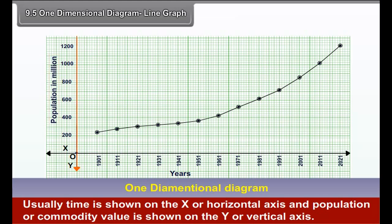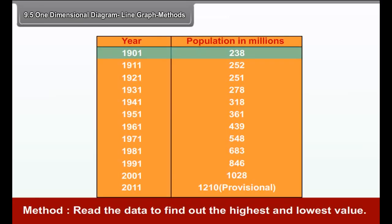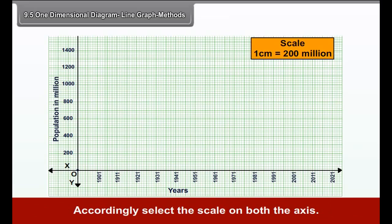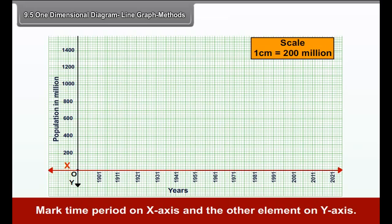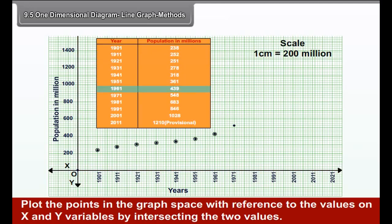9.5 One-dimensional diagram. Line graph and bar graph are one-dimensional diagrams. Line graph. A line graph is a one-dimensional diagram. In this graph, two elements are shown. Usually, time is shown on the x or horizontal axis and population or commodity value is shown on the y or vertical axis.